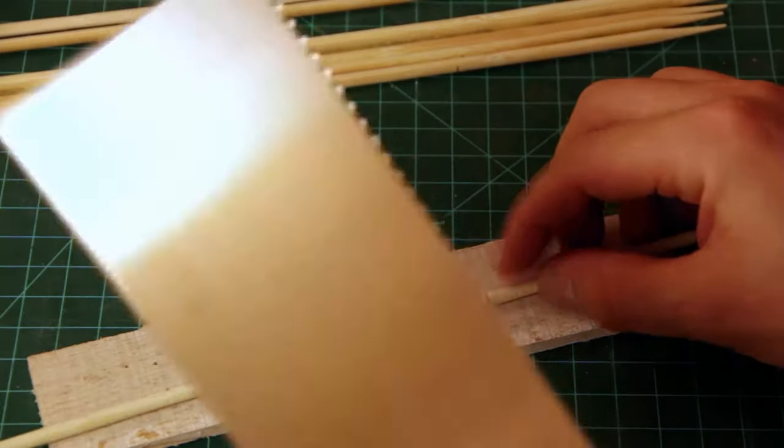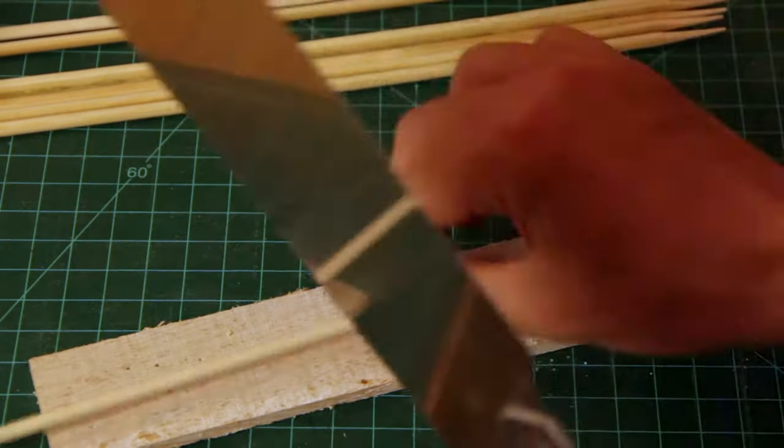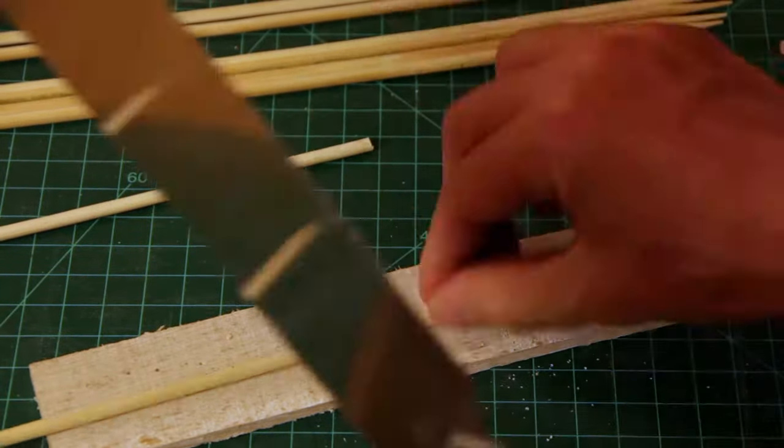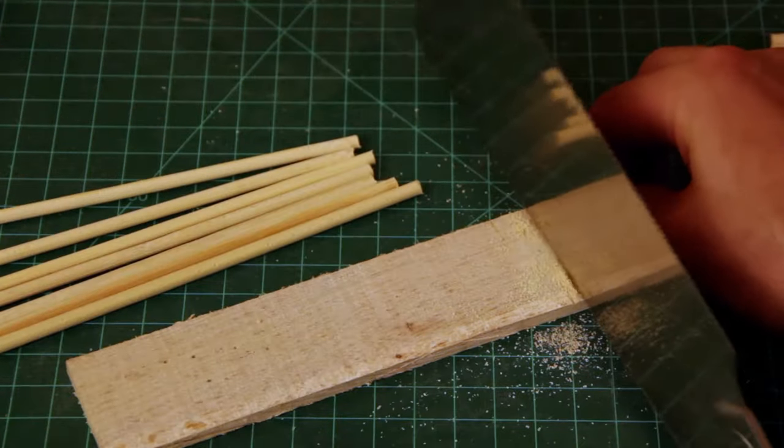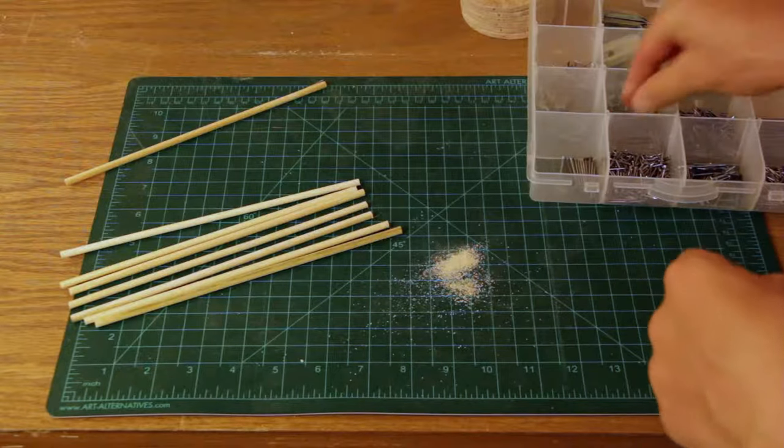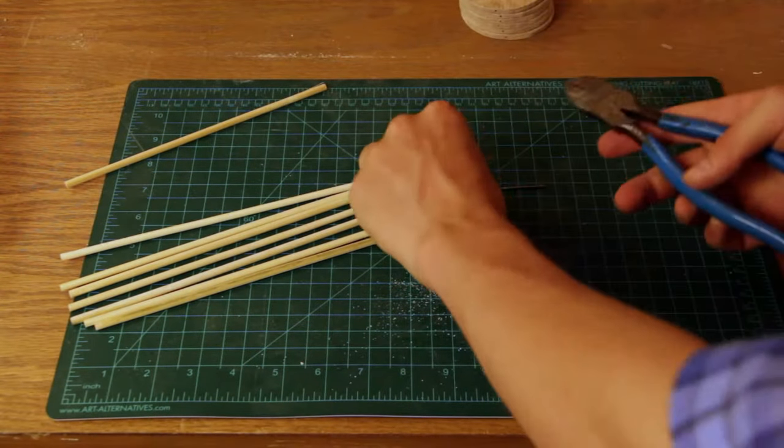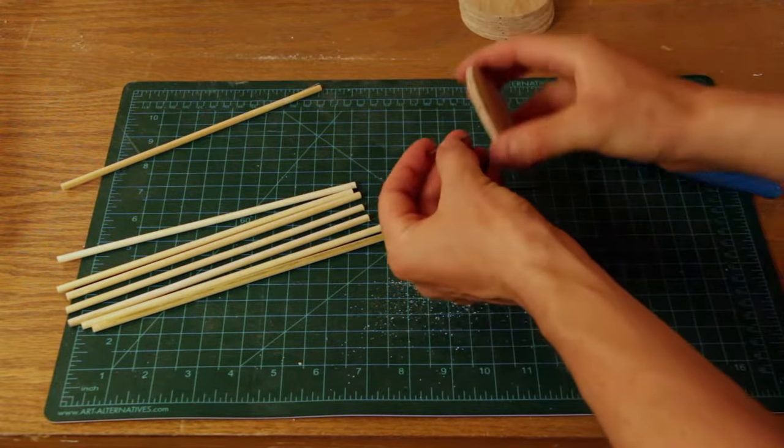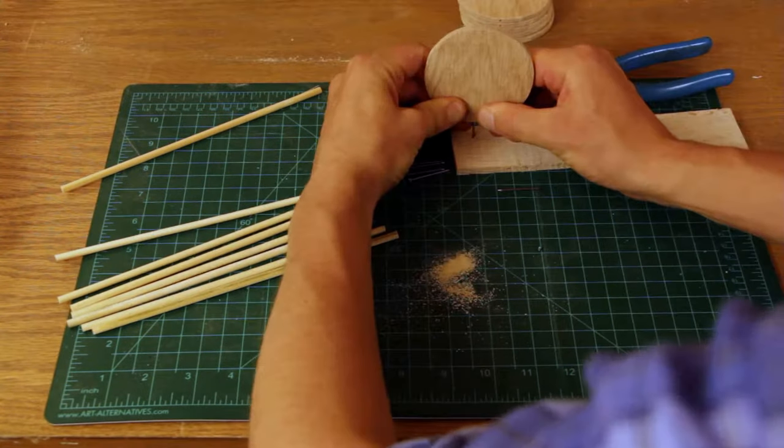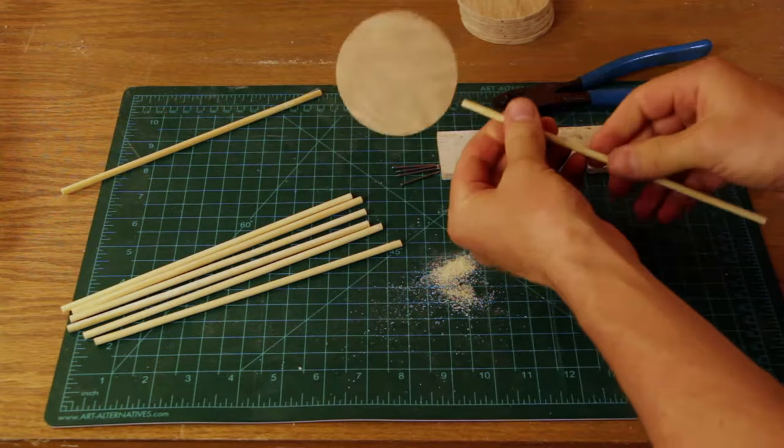Next, I'll cut all the rods to length. Then I'll take a set of nails, cut the head off of each one, and join the two pieces together with the nail in between. I'd like it to be a pretty tight fit.